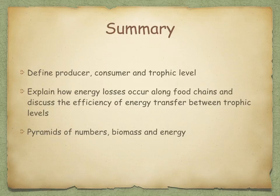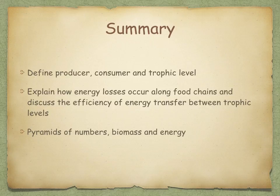In summary, we've looked at what a producer, consumer, and trophic level is. We've explained how energy is lost along food chains and looked at the efficiency of energy transfer between different trophic levels. Finally, we looked at pyramids of numbers, biomass, and energy. That concludes our lesson.